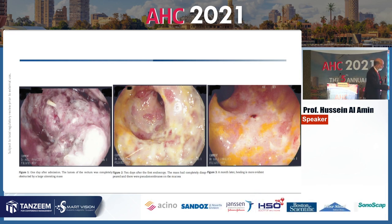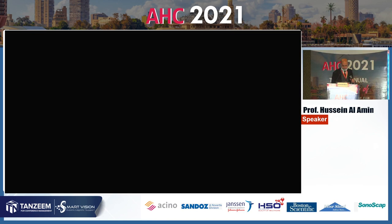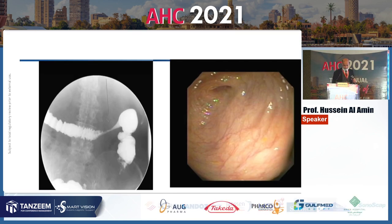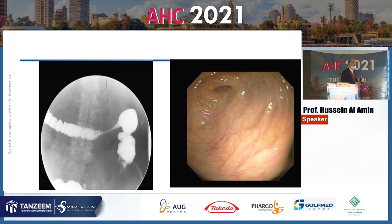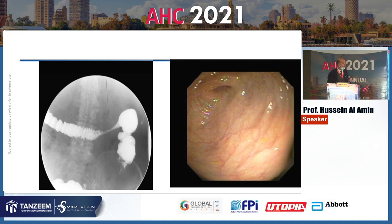One of the most important complications of ischemic colitis is stricture formation, occurring in about 10 percent of patients. These strictures tend to be long and are typically treated by surgery rather than endoscopic dilatation.